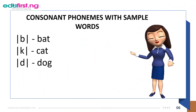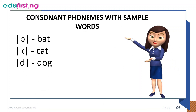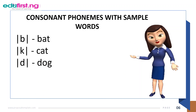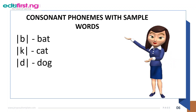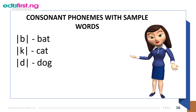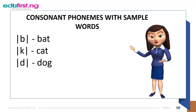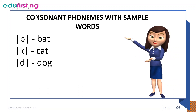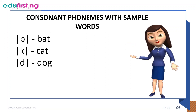Consonant phonemes with sample words: we have the /b/ sound for bat, we have the /k/ sound for cats, and we have the /d/ sound for dog.